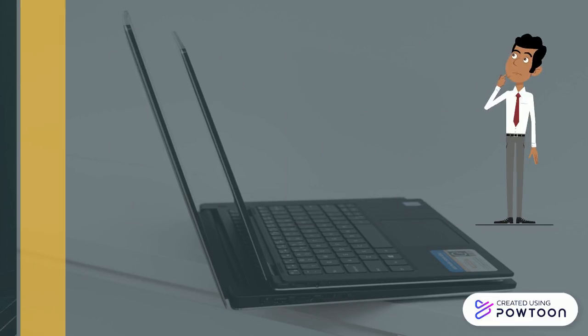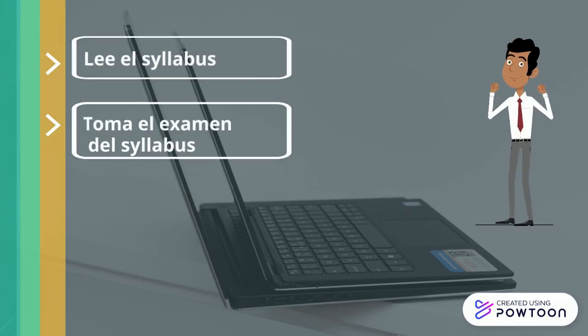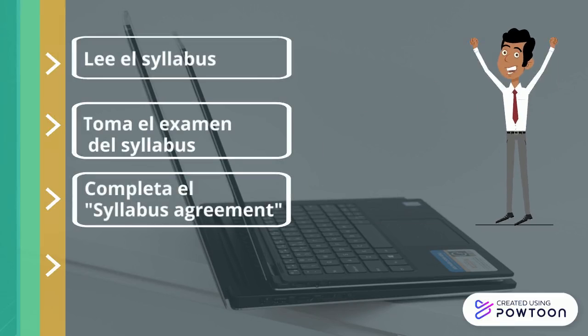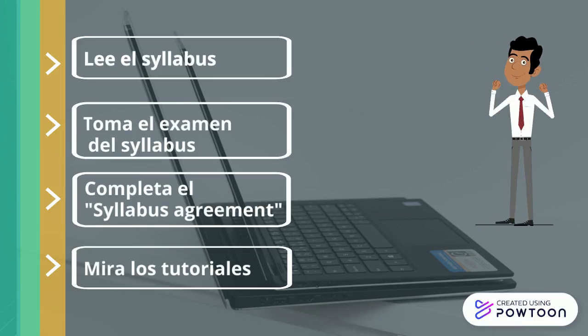These are the things that you have to do as soon as possible. First, read the syllabus. Second, take the quiz for the syllabus. Third, complete the syllabus agreement, and finally watch every tutorial I've made for you.